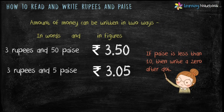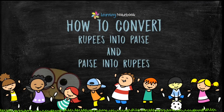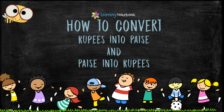Most students make a mistake in writing 50 paise and 5 paise. Make note that if paise is less than 10, then write a zero after the dot. For example, if there is 6 paise, then in figures it will be written as 0.06. Now let's see how to convert rupees into paise and paise into rupees.